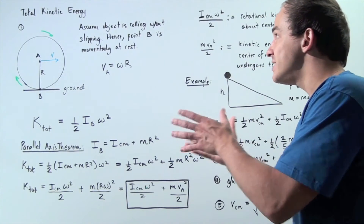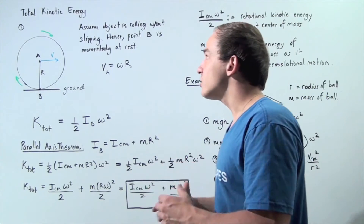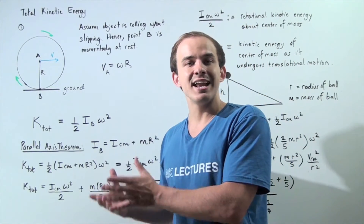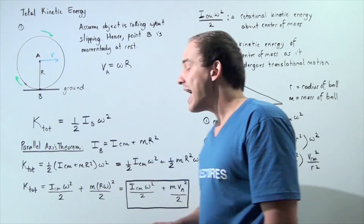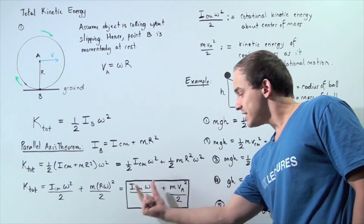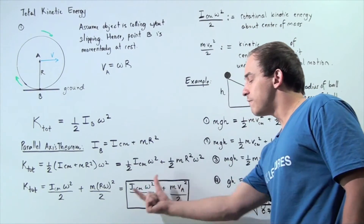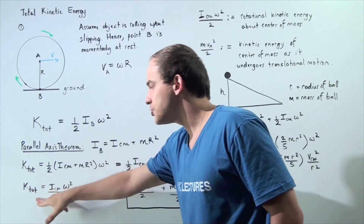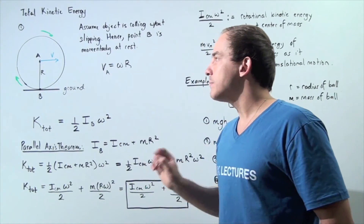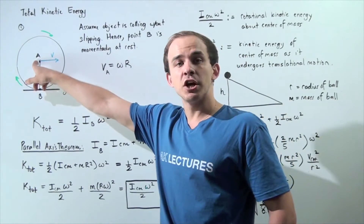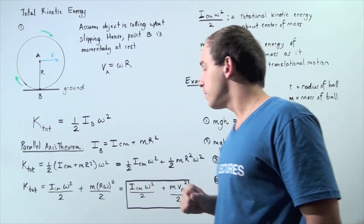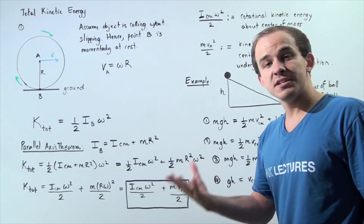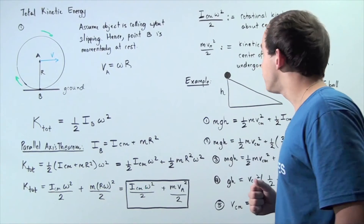Replacing that term, the total kinetic energy of our object equals two sums: one-half mV_A squared, which is the translational kinetic energy at the center of mass, plus one-half I_cm omega squared, which is the rotational kinetic energy about the center of mass. This confirms our initial statement that total kinetic energy equals the sum of translational and rotational kinetic energies about point A, the center of mass.